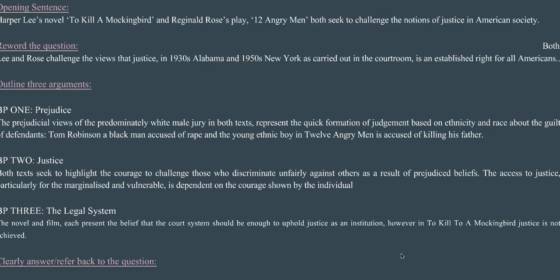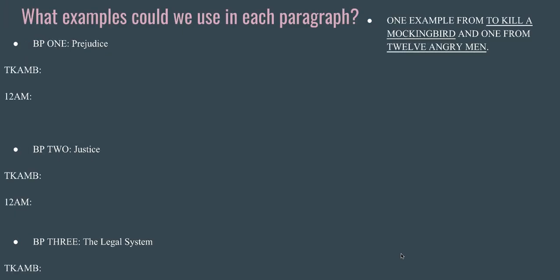It is evident in To Kill a Mockingbird and 12 Angry Men that prejudice does stand in the way of Tom Robinson and the accused accessing justice, despite the courageous actions of Juror 8 and Atticus Finch. I'm saying that even though the accused in 12 Angry Men is eventually found not guilty, prejudice still stands in the way — because if it wasn't for the actions of Juror 8, that boy would have been sent to his death. If you're watching at home, pause and look at your notes: what examples do you have for prejudice? Go back to your weekly readings and find your examples, or check notes from class. The same goes for justice and the legal system.